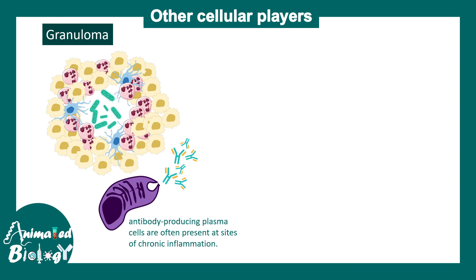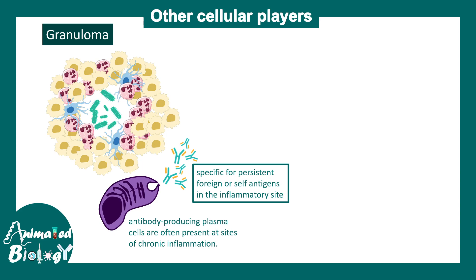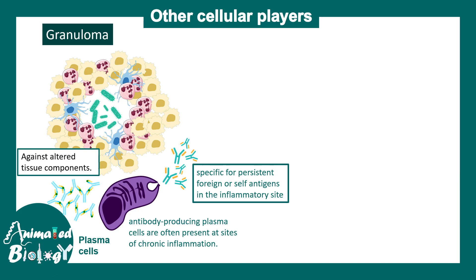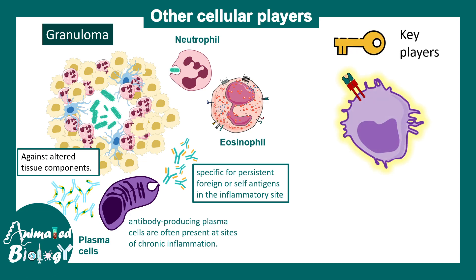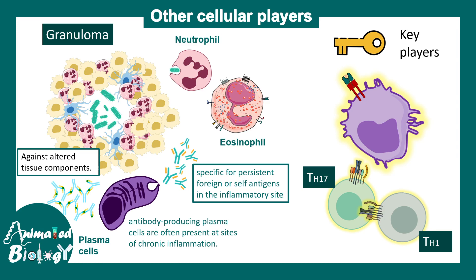There are other players such as antibody-producing plasma cells, which can produce antibodies specific to an antigen at the inflammatory site, or antibodies against altered tissue components. Plasma cells act by producing antibodies, which can do many things like opsonization. Neutrophils and eosinophils are not major players in chronic inflammation but can also be found at the site. The major players are M1 macrophages and TH1 and TH17 subtypes of T cells.